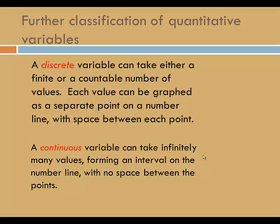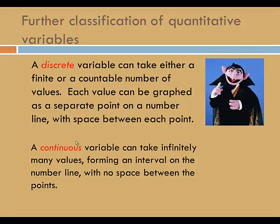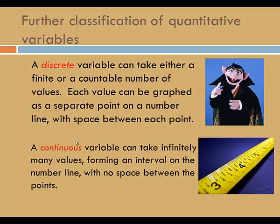Quantitative variables can be further classified as discrete or continuous. A discrete variable can take either a finite or a countable number of values, while a continuous variable can take infinitely many values. Remember that if you can count to get the value, it's discrete, and if you have to measure to get the value, it's continuous.